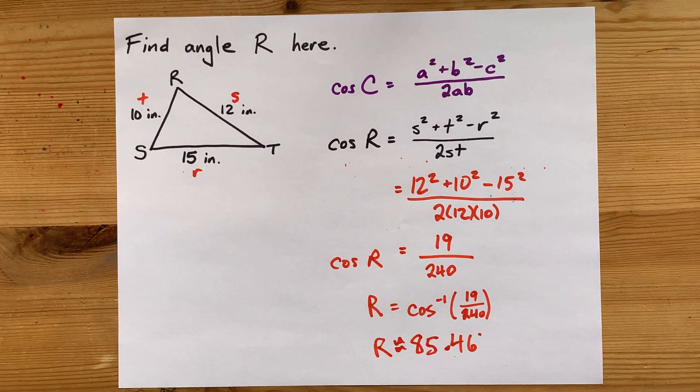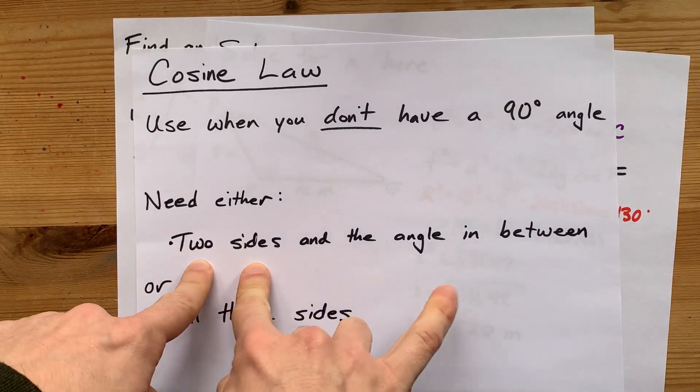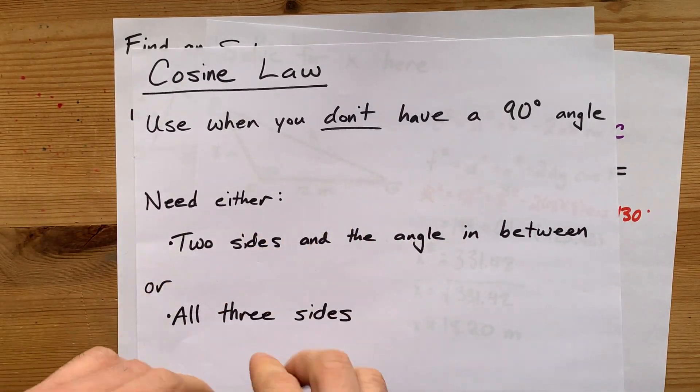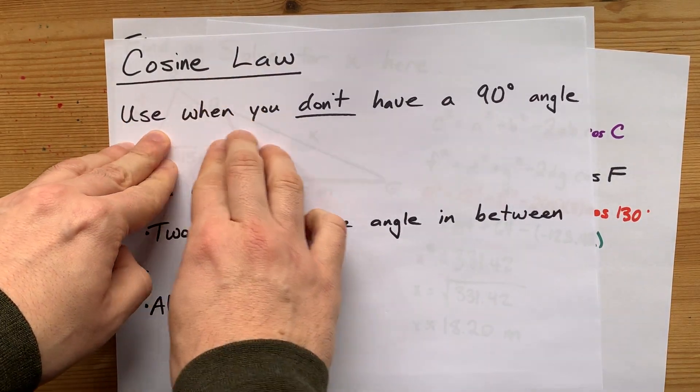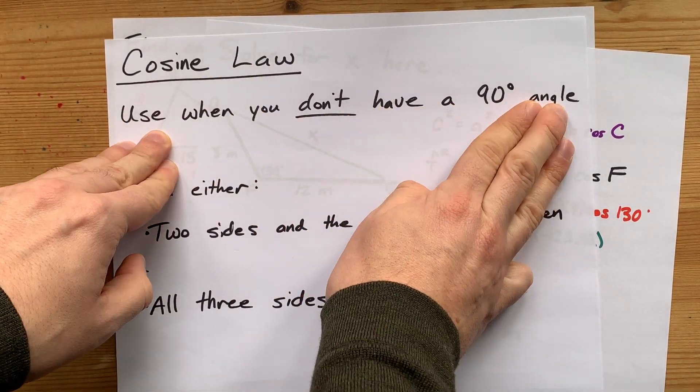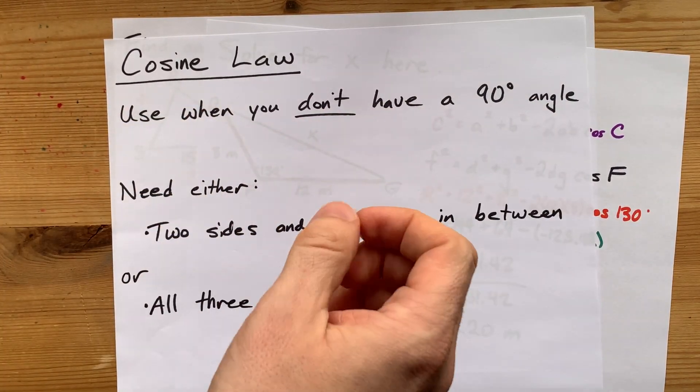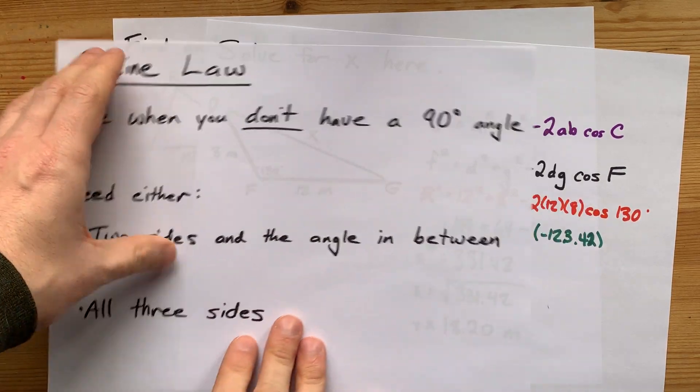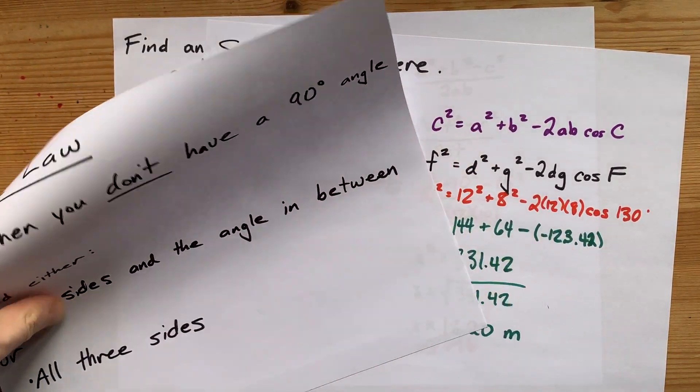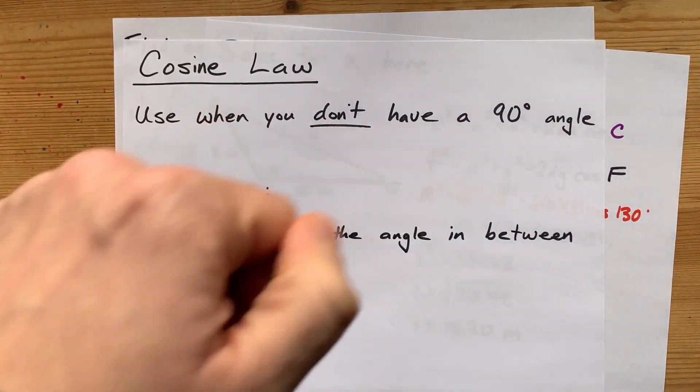Cosine law is what you use when you have either two sides and the angle in between them or all three sides of a triangle. I've said use it when you don't have a 90 degree angle. But the secret is you actually can use it when you have a 90 degree angle. We just don't recommend it because it feels like a lot more work than regular sine cosine tan or the Pythagorean theorem. Thanks for being with me and best of luck.